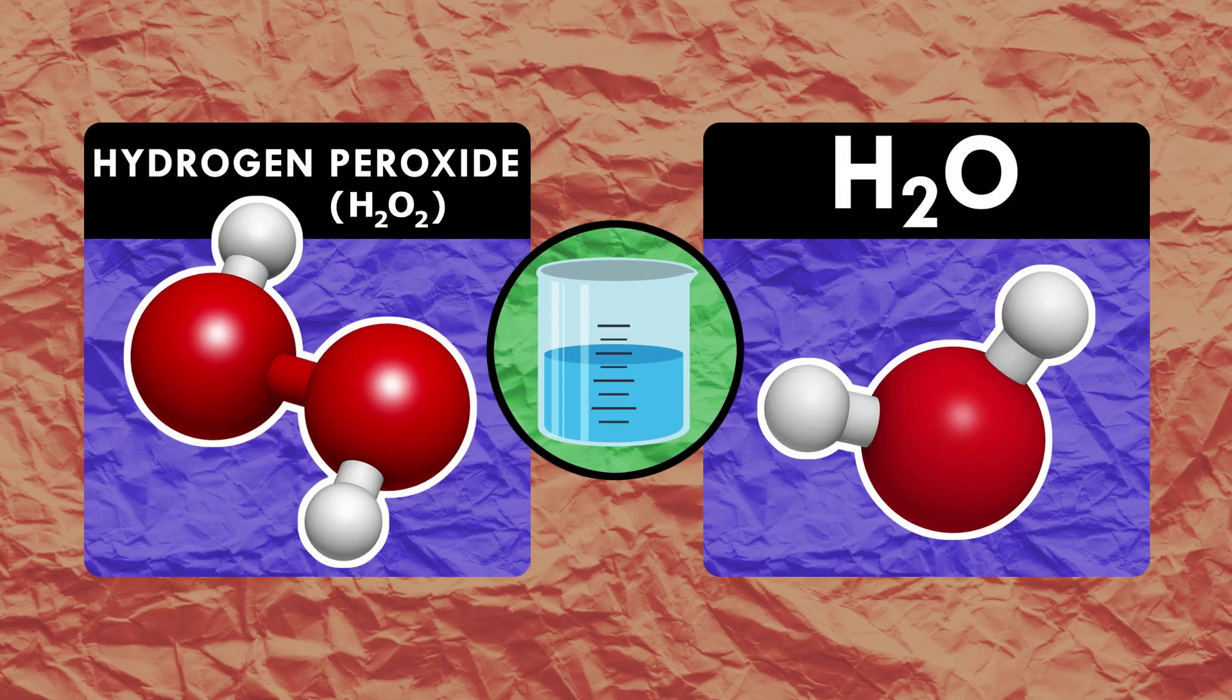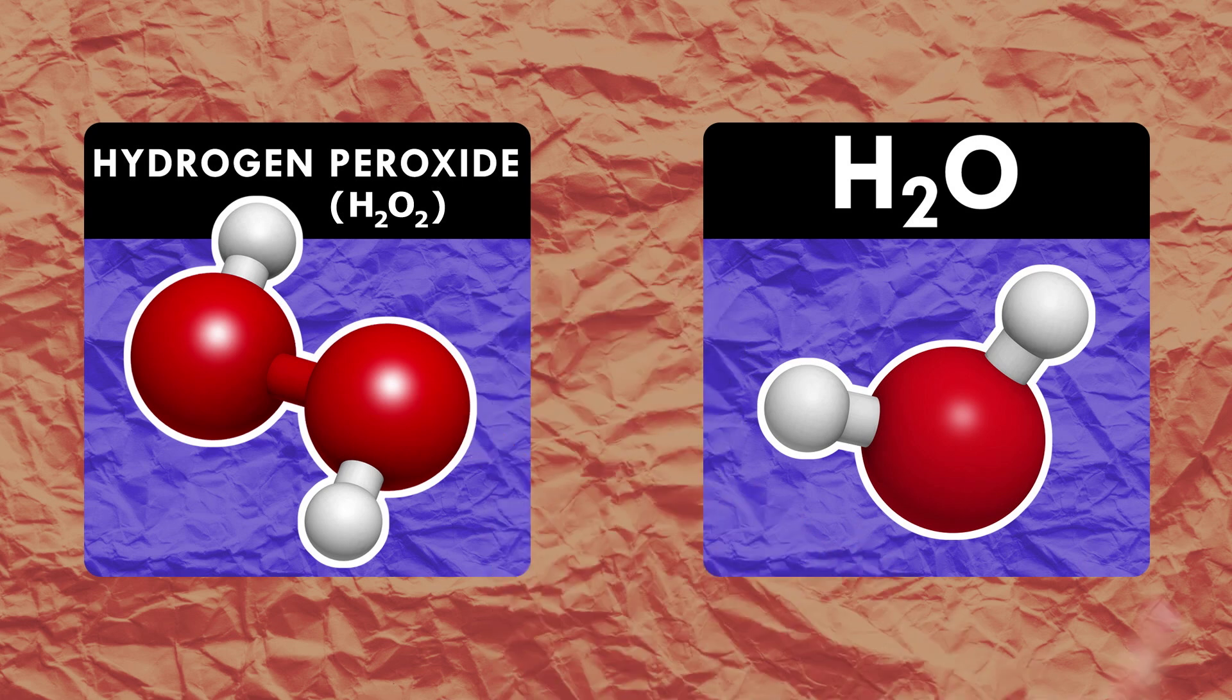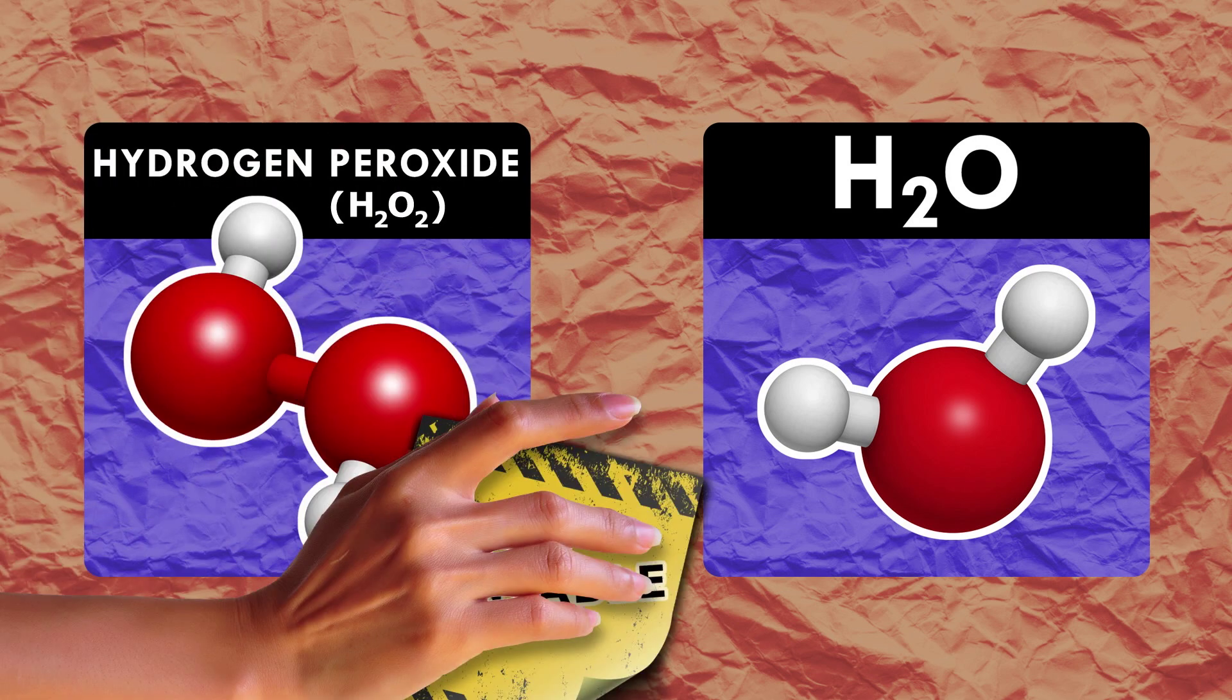Chemically speaking, hydrogen peroxide looks like water, except that it's got an extra oxygen atom squeezed into it. The extra oxygen makes it unstable and potentially dangerous.